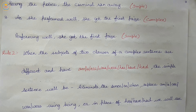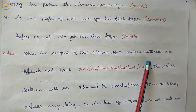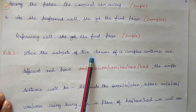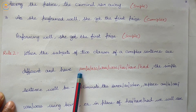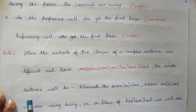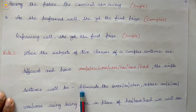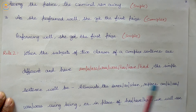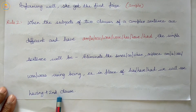Rule number two: When the subjects of two clauses of a complex sentence are different, and have the be verb — am, is, are, was, were, has, have, or had — the simple sentence will be formed by eliminating since, as, or when, and replacing am/is/are/was/were with 'being,' or in place of has/have/had, we will use 'having' plus the second clause.